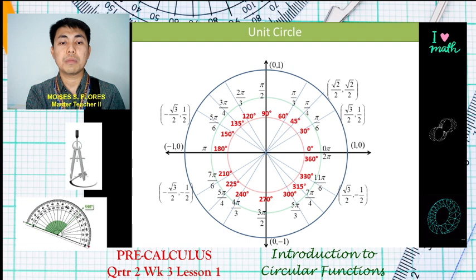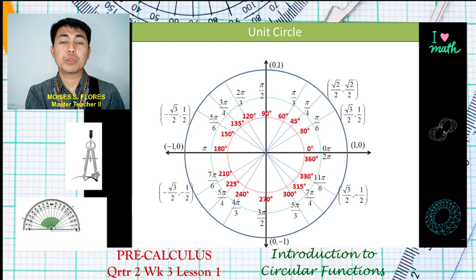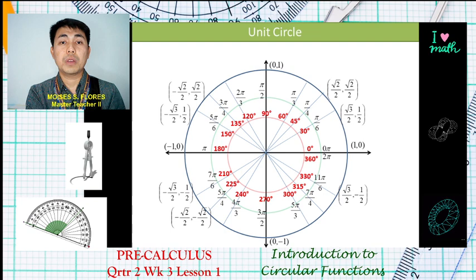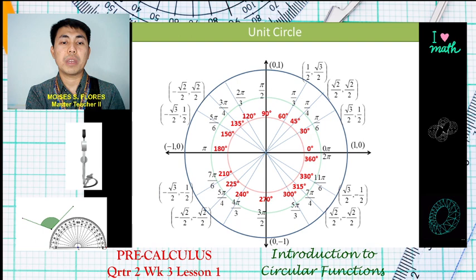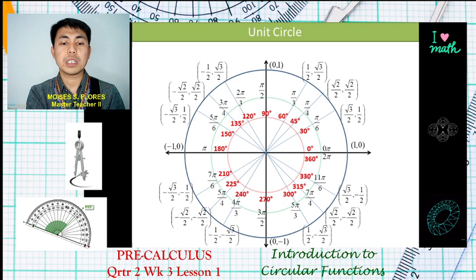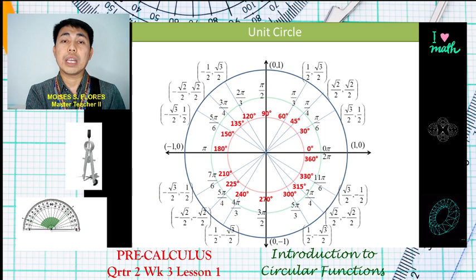For 45 degrees, both x and y are equal — they have the same value, √2/2. The only difference across quadrants is changing positive to negative signs. For 60 degrees, the coordinates are (1/2, √3/2), with reflections giving (-1/2, √3/2), (-1/2, -√3/2), and (1/2, -√3/2).